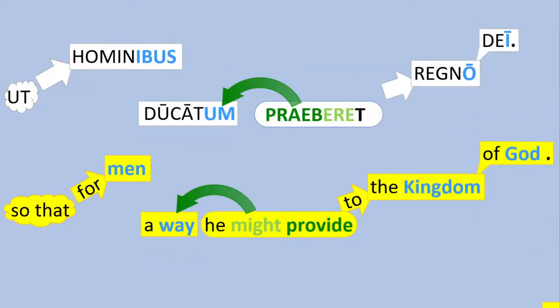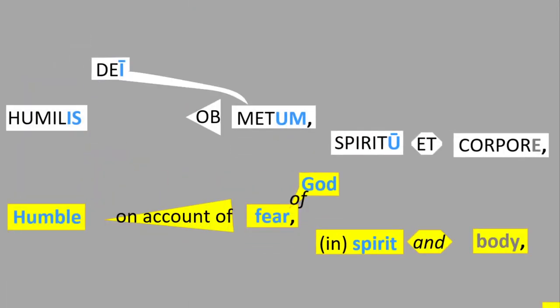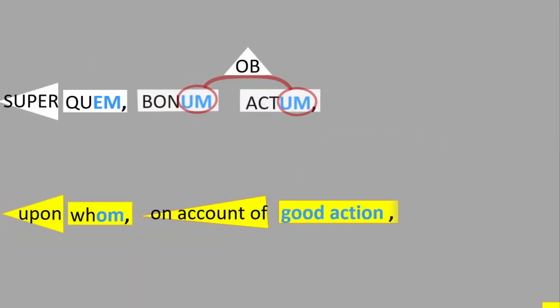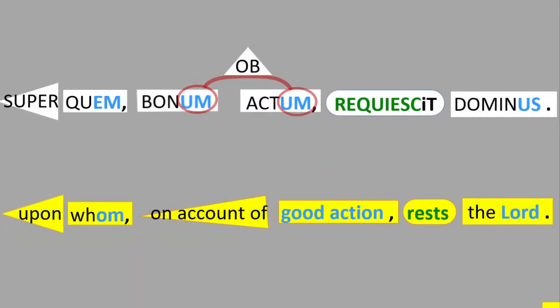ut omnibus ducatum preberet regno dei, humilis dei ab metum spiritu et corpere super quem bonum abactum requiescit